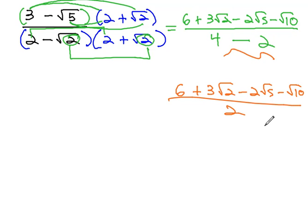We can't do any reducing here, because if there was any reducing, we would have to factor first. Because there is no factoring available, this is going to become our final solution.